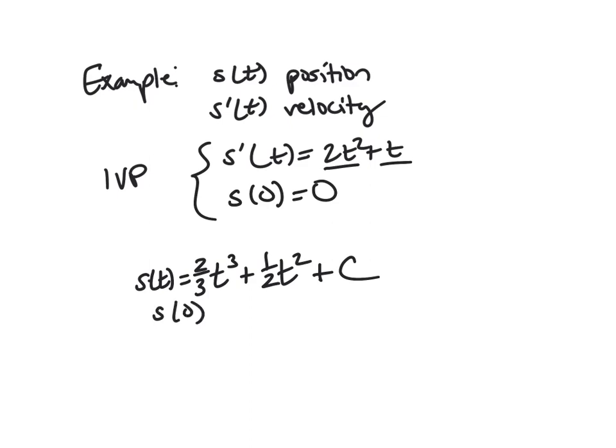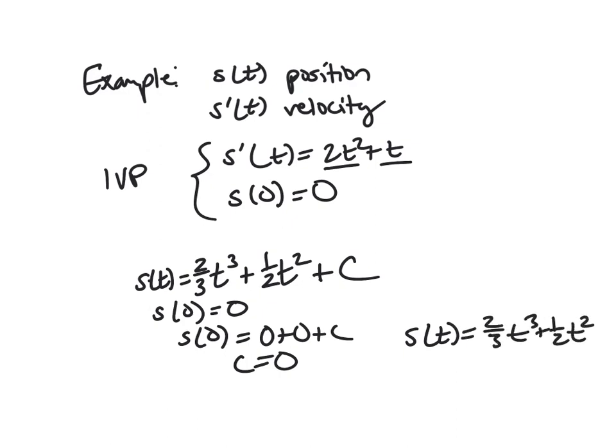But we know that s(0) = 0. But s(0) is also, well, if we plug in 0, what do we get? We get 0 + 0 + c. These are equal. So c is 0. And so our solution in this case would be (2/3)t³ + (1/2)t².